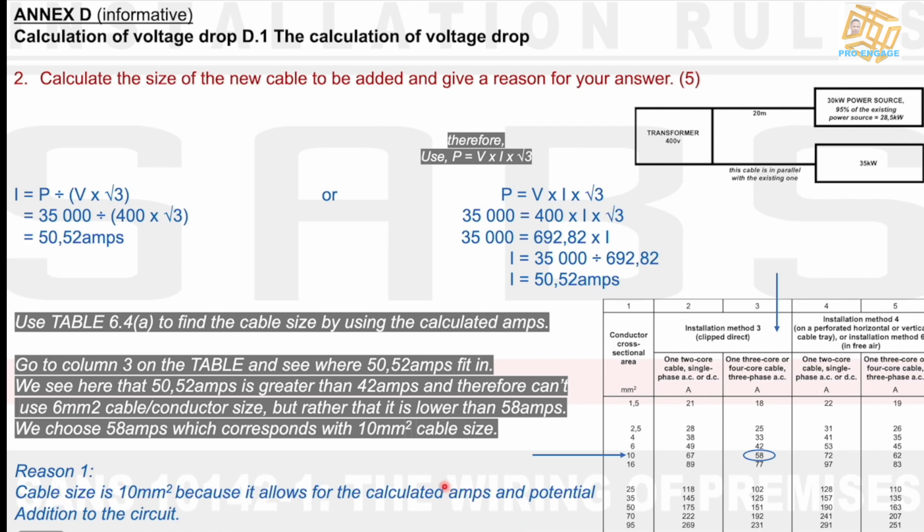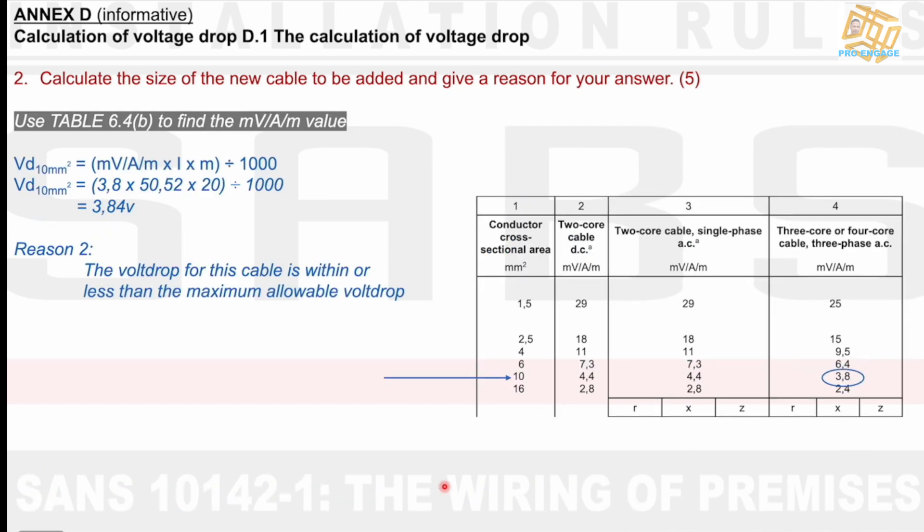So is there another reason why I can use this cable? I say maybe. Let's see. I calculate the actual voltage drop using that cable size. So I go to the table that gives us the millivolt per ampere meter value, which is 3.8. I use 10 mm. I use 3.8 for 3 phase. I inject that into that formula, and I get a voltage drop of 3.84, which is a great answer. The voltage drop, according to another reason, for this cable is within or less than the maximum allowable voltage drop. For 5 marks, I could possibly do this if I wanted to, just to substantiate my answer.